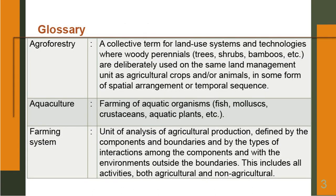A glossary of difficult words. Agroforestry: it is a collective term for land use systems and technologies where woody perennials such as trees, shrubs, bamboos, etcetera are deliberately used on the same land unit as agricultural crops and/or animals in some form of spatial arrangement or temporal sequence. In this case, sometimes you may keep animals or sometimes you may not keep animals in agroforestry systems.